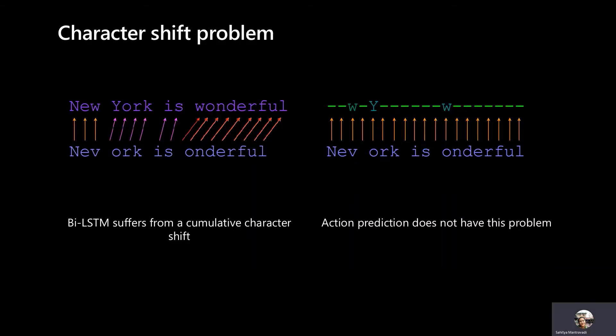Here we see the character shift problem. On the left side of the screen, the top row is the ground truth text — 'New York is wonderful' — and the bottom row is the OCR text. Here we have a substitution with the W turning to a V, a deletion with the Y in York removed, and another deletion with the W in wonderful removed. As these deletions accumulate, the bi-LSTM suffers a cumulative character shift, and the network has to account for this growing shift. By contrast, the action prediction model does not have this problem. For each character time step, four actions are predicted: an insertion and which character to insert, a deletion, a substitution, and no action at all.